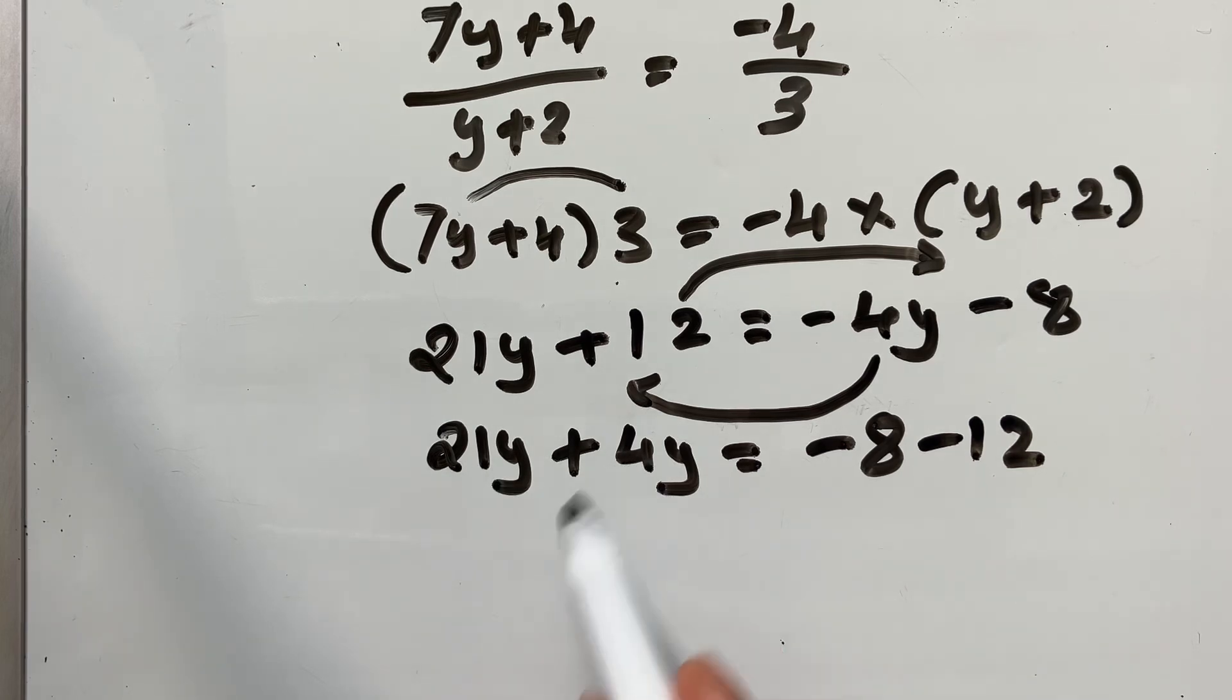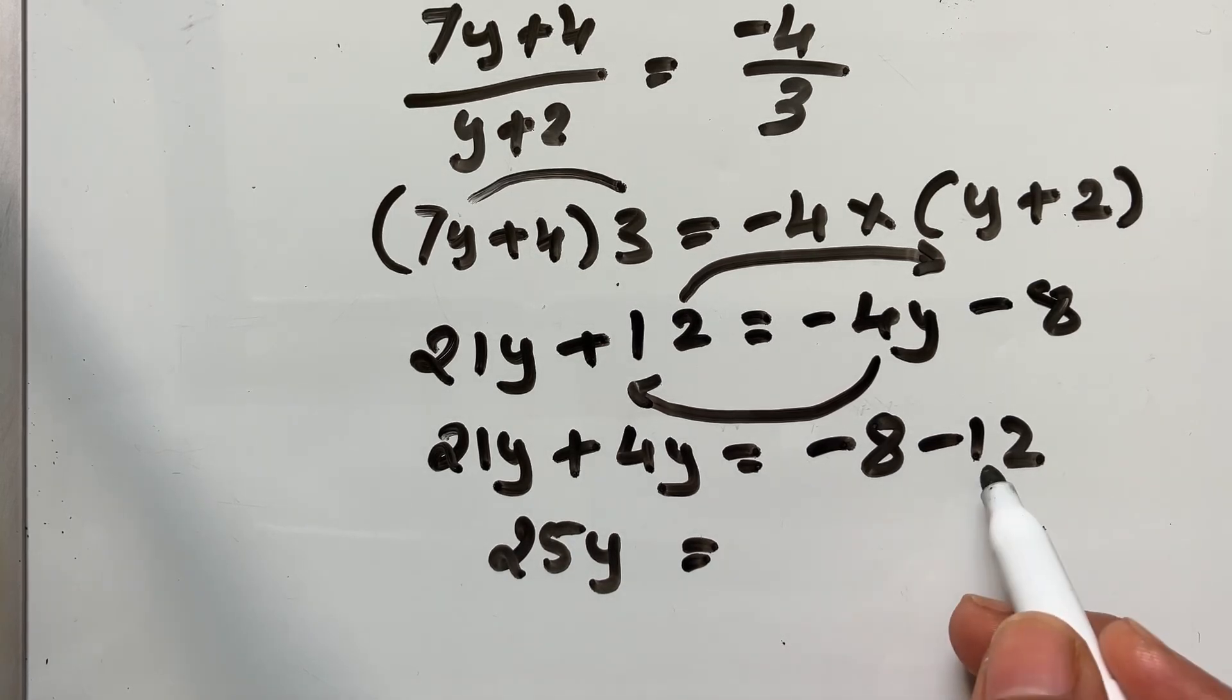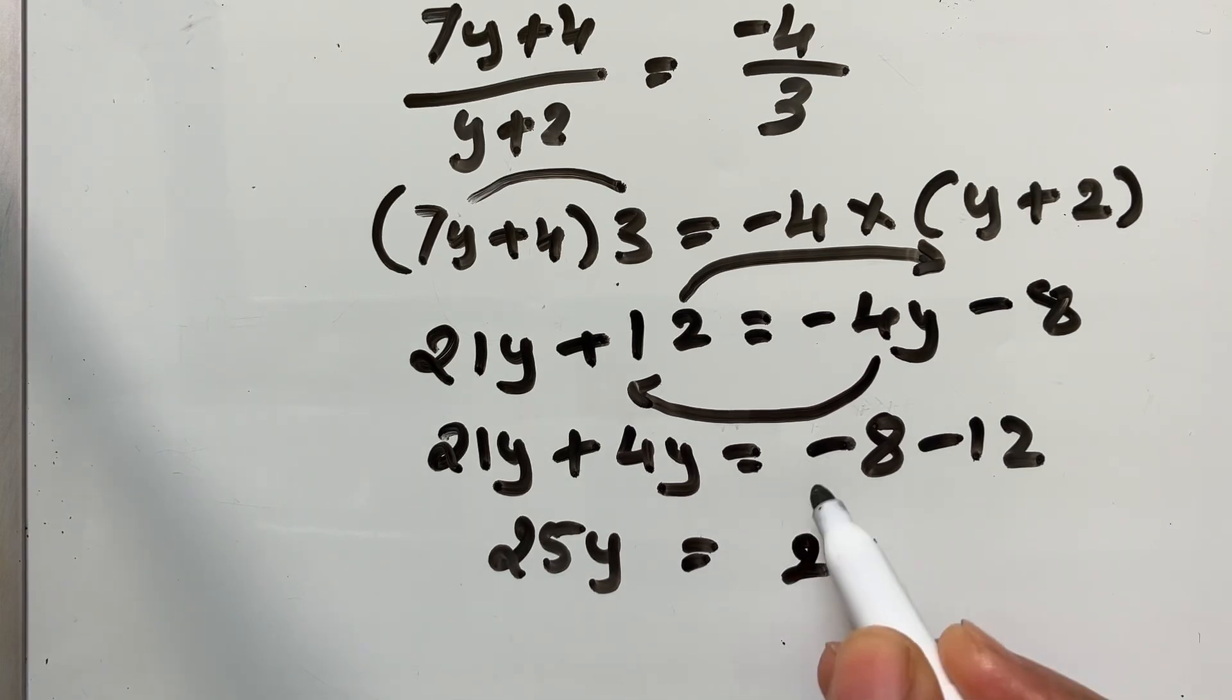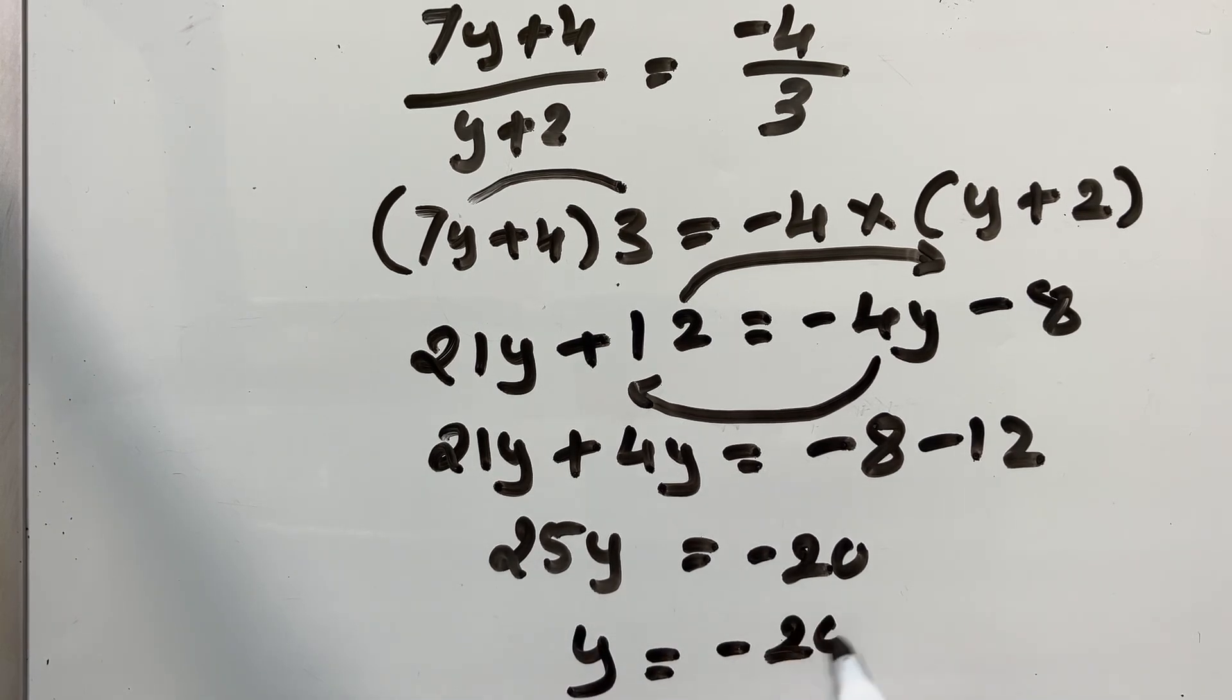21 plus 4 is 25y minus 8 minus 12. Both negative. I mean minus sign. So, you need to add them. But keep the negative sign. 25y is equal to negative 20. Y should be negative 20 over 25.